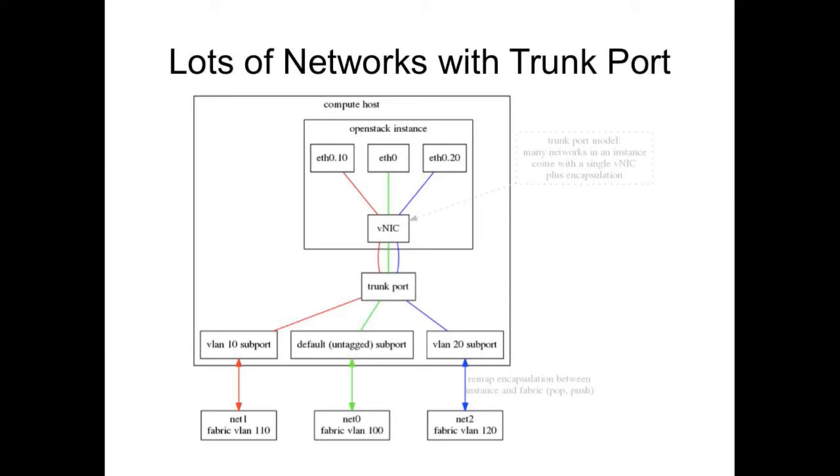There's some extra information encoded, that for each subport, we have to express what kind of encapsulation type and ID I want to see inside my instance, what kind of tag I want to see and identify the network with. It is also an important note that this tag is not the tag that you use in the CloudFabric. This tag is not the tag you see in your top of rack switch. This tag is local to your instance and never leaves your instance. It has to be remapped between the CloudFabric and the instance.